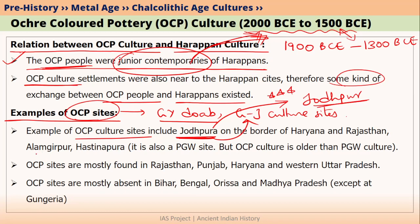In Uttar Pradesh, we also find OCP sites like Alamgirpur and Hastinapura. We know Alamgirpur was the easternmost site of Harappan culture and was also an important Late Harappan site, where we have found ochre-coloured pottery. If we talk about Hastinapura, Hastinapura is actually a PGW site — PGW means Painted Grey Ware.